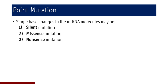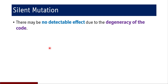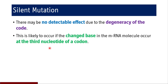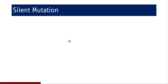A silent mutation has no detectable effect, because of the degeneracy of the genetic code. This is likely to occur when the changed base in the mRNA molecule occurs at the third nucleotide of a codon — known as the wobble phenomenon. If the new codon codes for the same amino acid, the mutation will not be detected at the protein level, though sequencing methods may detect it at DNA and mRNA levels.